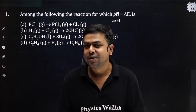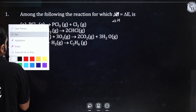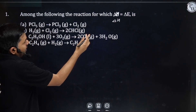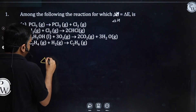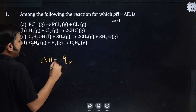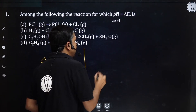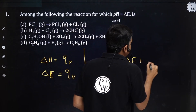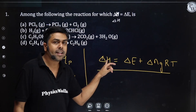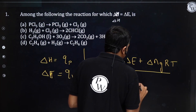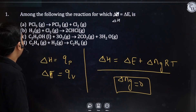The first question: among the following reactions, for which does ΔH equal ΔE? We need to find when change in enthalpy equals change in internal energy. ΔH is qp (heat at constant pressure) and ΔE is qv (heat at constant volume). The relation is ΔH = ΔU + ΔngRT. So for ΔH to equal ΔE, we need Δng = 0. We need to check which option gives Δng = 0.